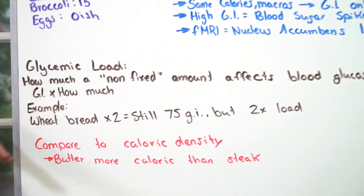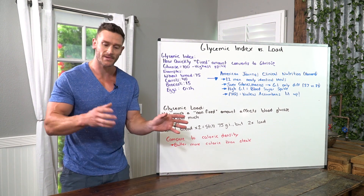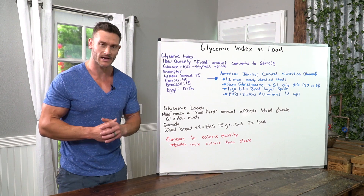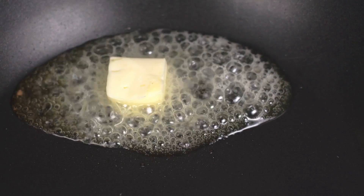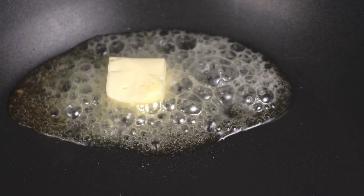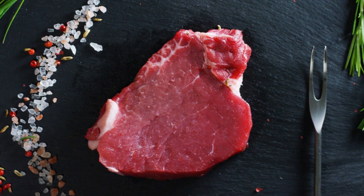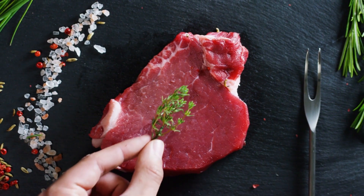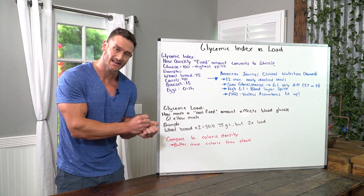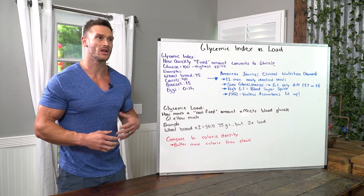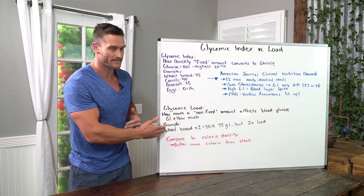The best way to compare it is like caloric density. We look at one piece of food compared to another and say that one is more calorically dense. A simple example: a square of butter might have just as many calories as an entire steak, because butter is more calorically dense than the steak. So it's all about balancing glycemic index and glycemic load.